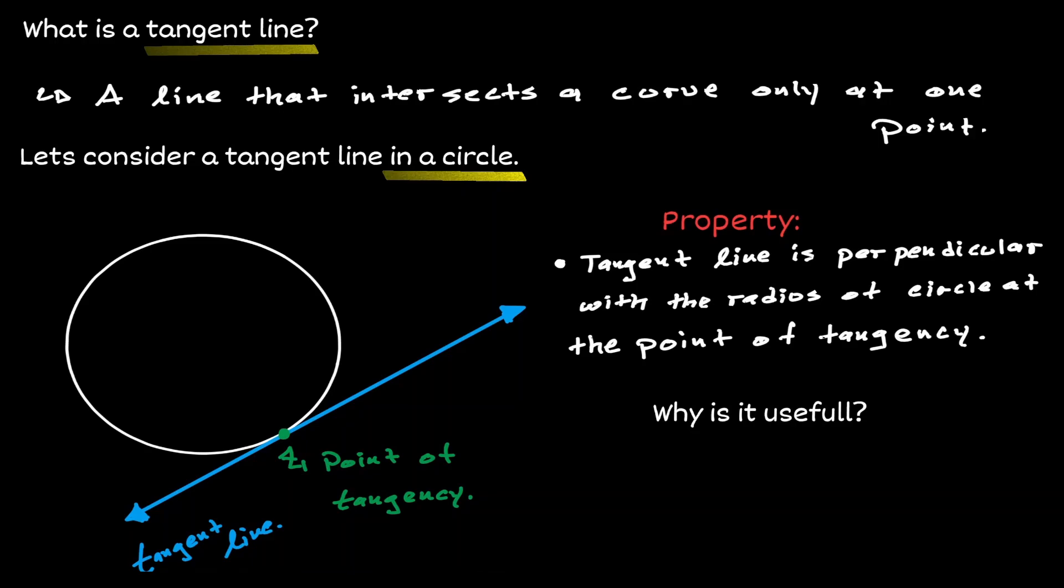So let's consider the center of our circle, which should be somewhere around here. When we draw the radius of the circle going towards the point of tangency, they will always be perpendicular and therefore the intersection will always be 90 degrees.